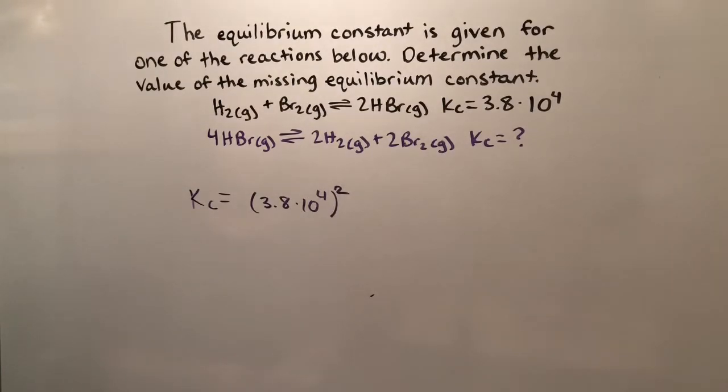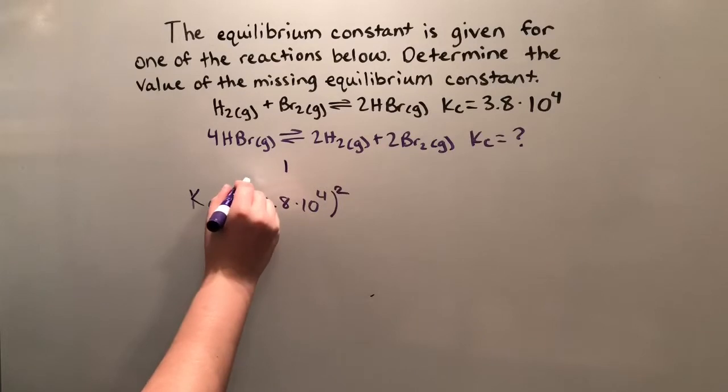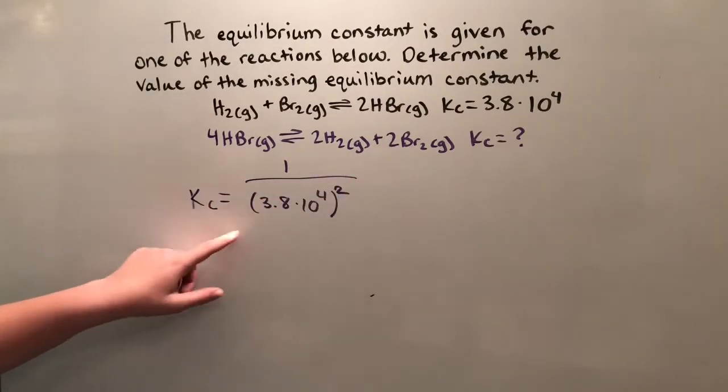So that means we're going to need to take the inverse of the manipulated Kc value to get our final Kc value. So we're going to need to take one and divide it by this result.